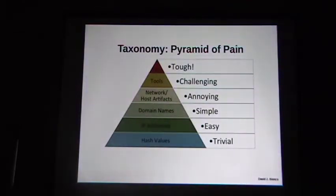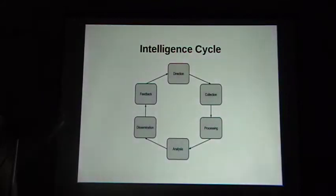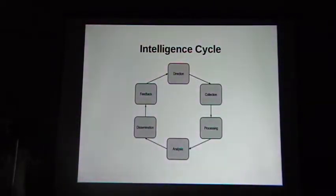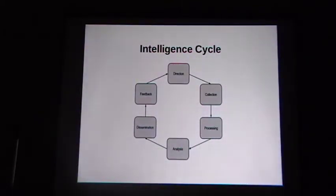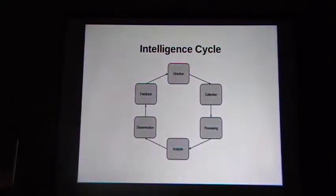Let's move to how we're going to structure the rest of the talk, which is the canonical intelligence cycle. This is not truly a waterfall process — each phase is kind of a loop that's constantly processing. Direction is always going on, collection is constantly happening, processing and analysis are continuous, but they feed back and forth to each other. It's not entirely unlike the OODA loop — observe, orient, decide, act. In this case, the output is analysis you provide to somebody who's then going to act on it.